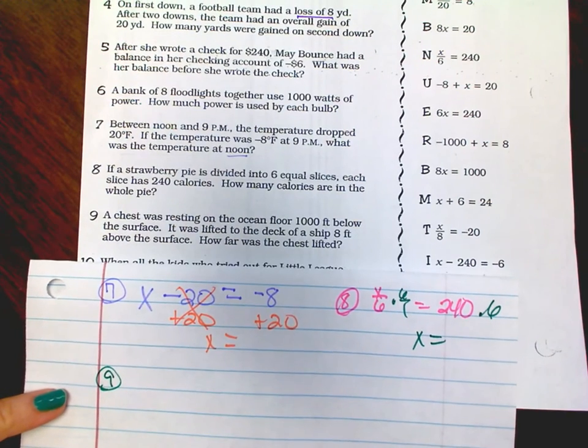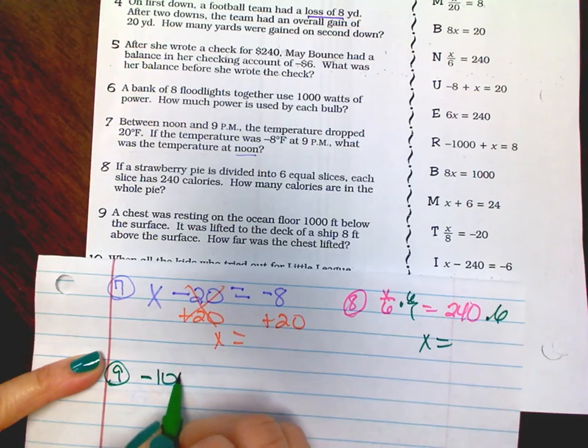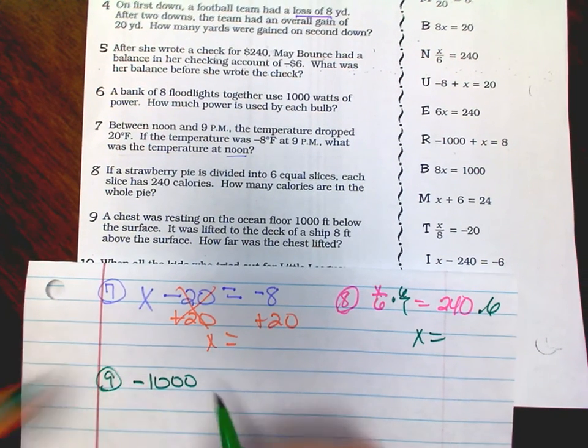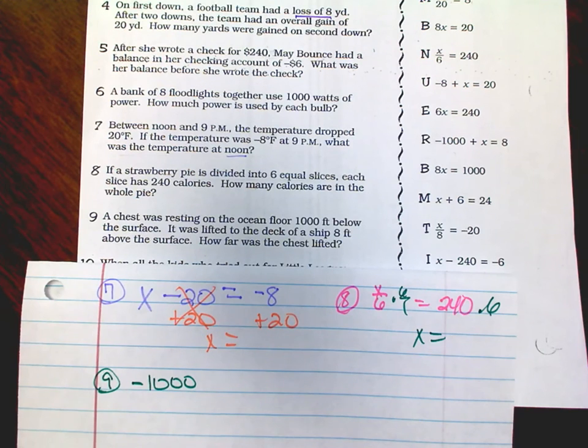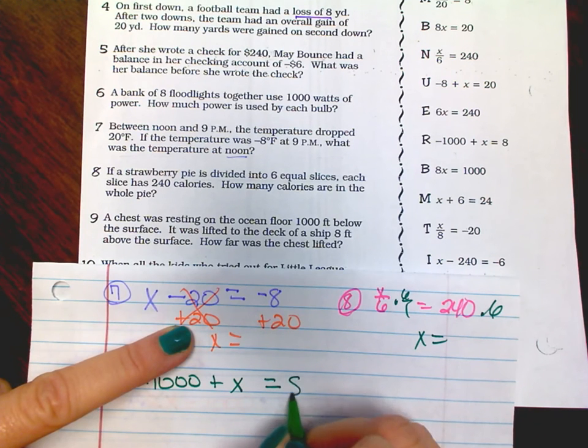How far was the chest lifted? So we started off at the bottom of 1,000 below, so that's a negative, and we're going to raise it up, but we don't know how much yet. But when we get it to where we want it, it's 8 feet above.